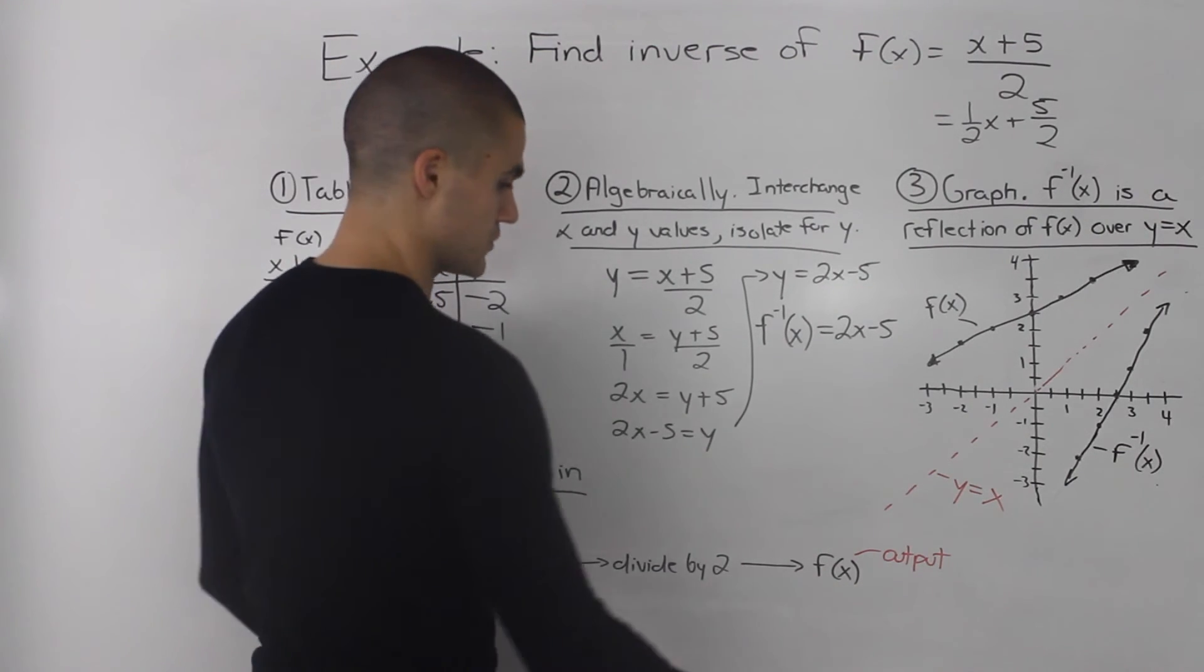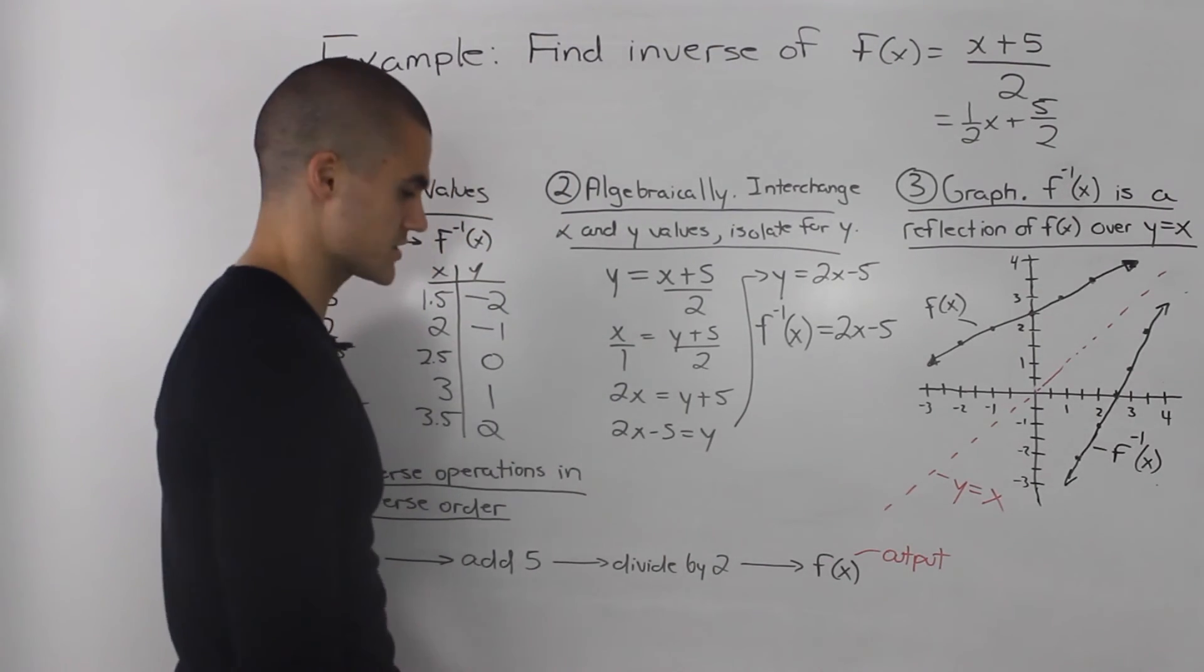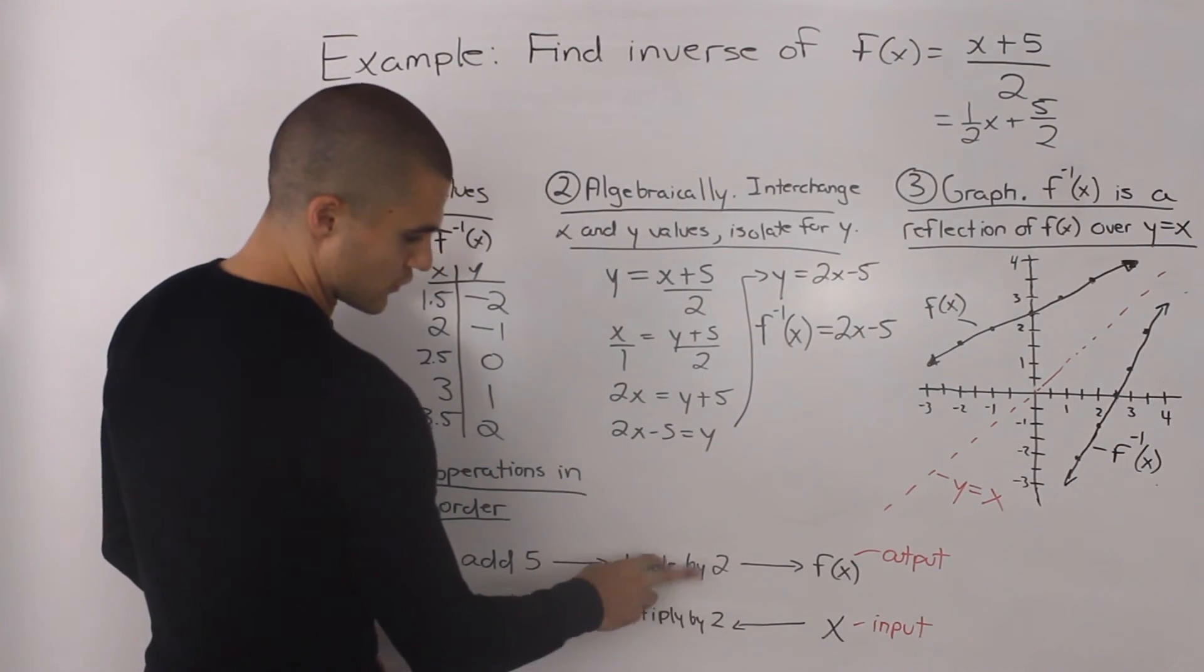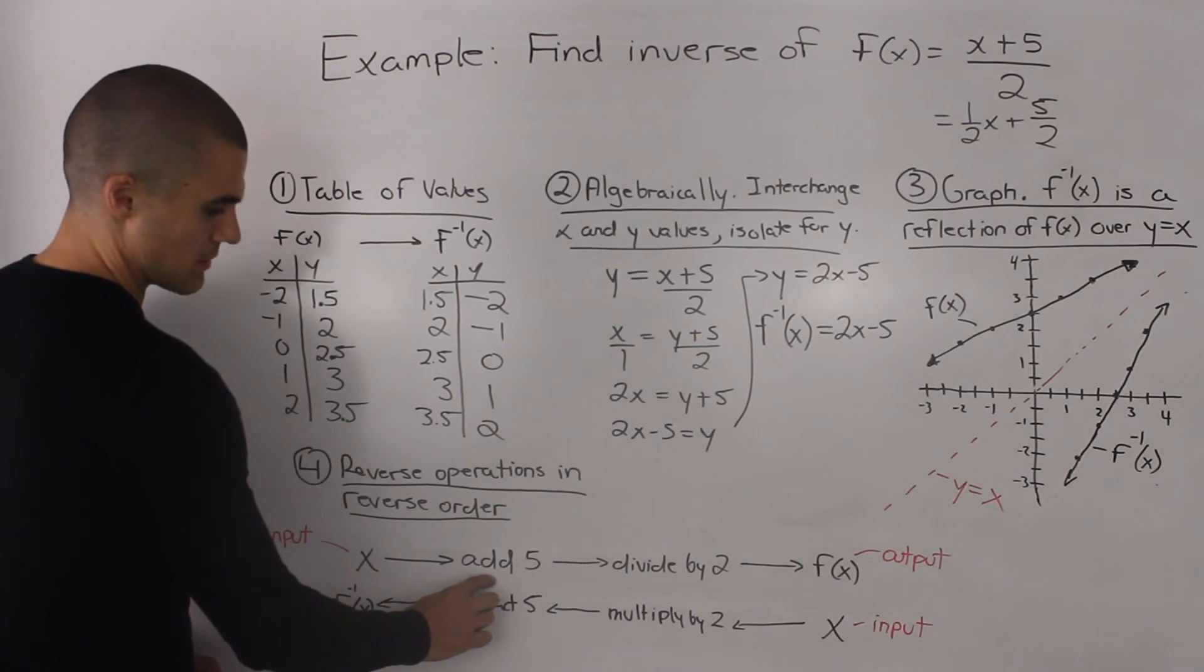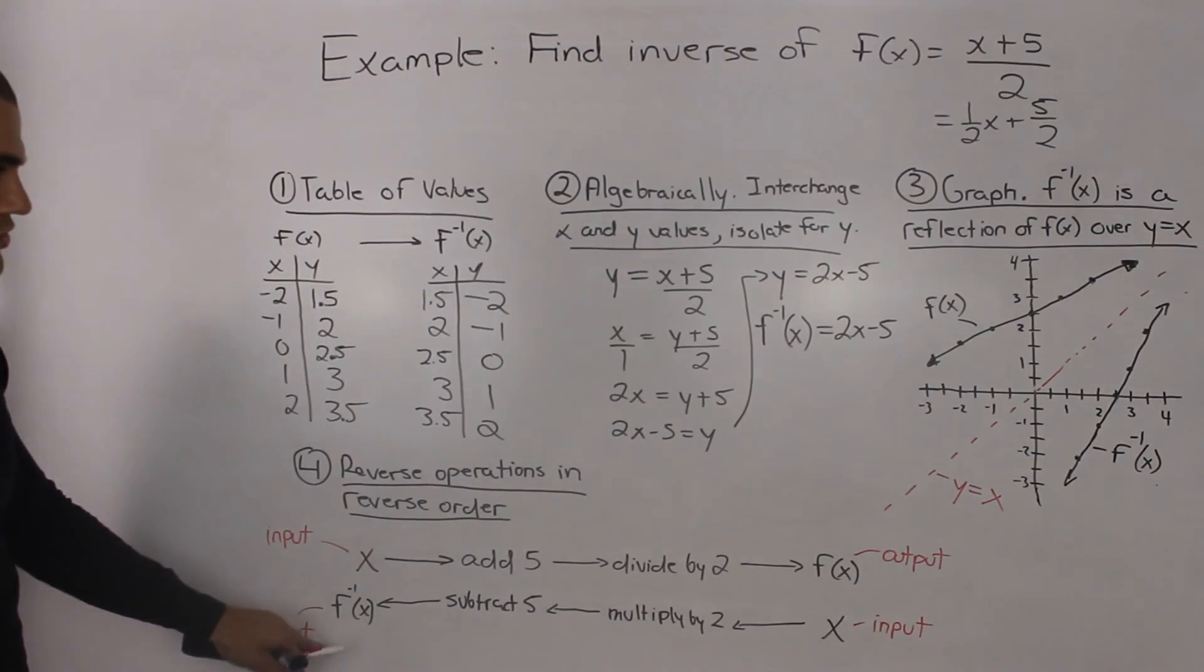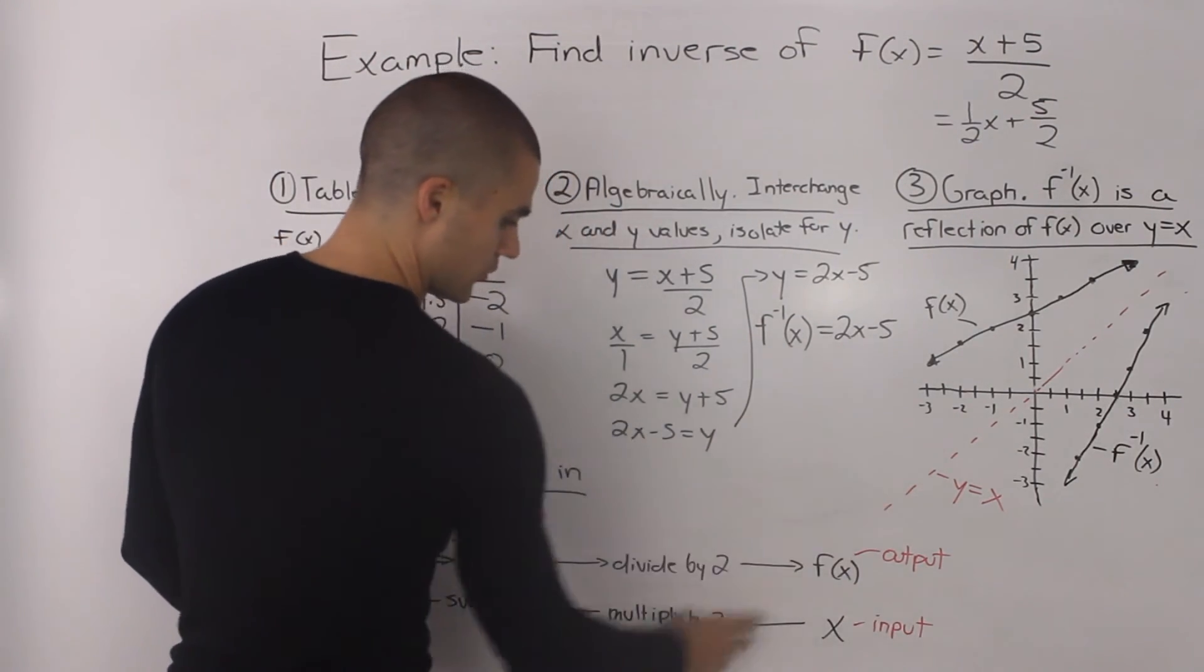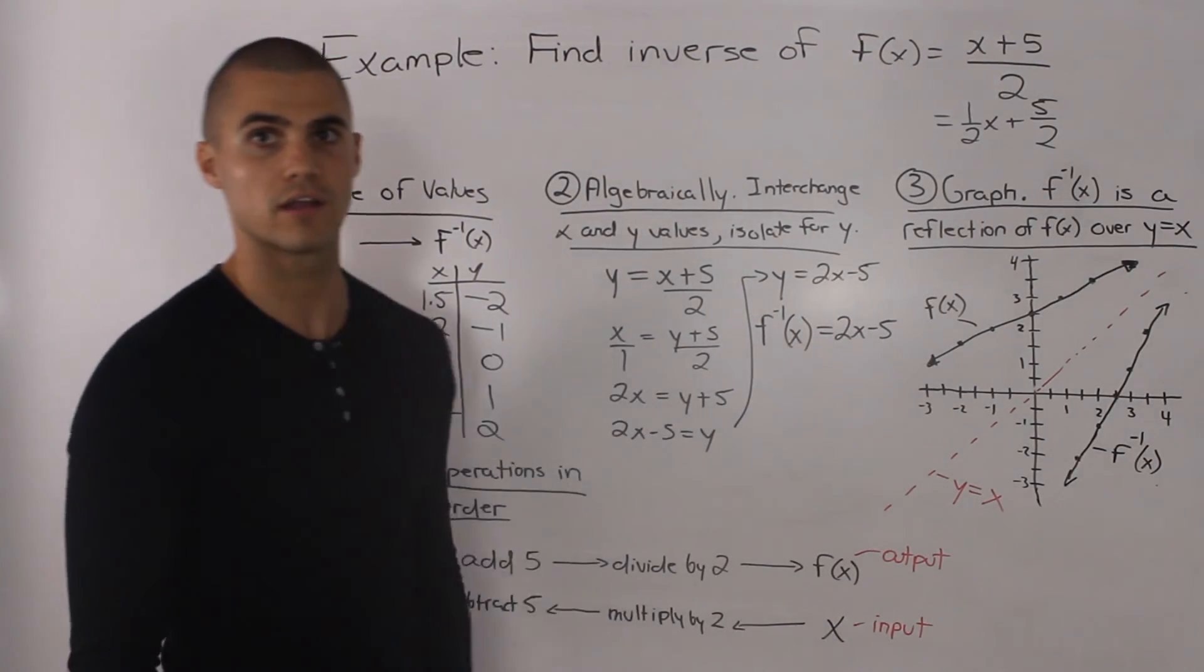So to find the inverse, we would just go in the reverse order and we would reverse all of the operations. So we take an input x, we would multiply it by 2, which is the reverse operation of dividing it by 2, and then we would subtract 5, which is the reverse operation of adding 5, and we would get our output, our inverse. And notice how that's the same as what we got up here. So again, we take an input x, multiply it by 2 and then subtract 5 and that is our inverse.